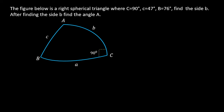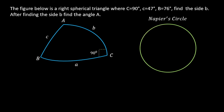To find side B, we will be using the Napier circle and applying Napier's rule. We divide the Napier circle into five parts. The angles facing C — which are B, C, and A — we make them complements. The right angle C is not included in the Napier circle.